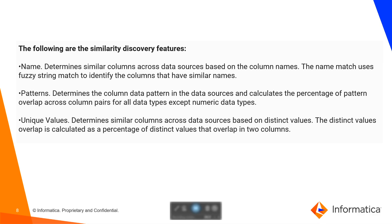What are the similarity discovery features available for 10.5 when using the similarity discovery scanner? You can determine similar columns across data sources based on column names; the name match uses a string method to identify columns that have similar names. For patterns, you can identify data patterns in data sources and calculate the percentage of pattern overlap across column pairs for all data types. For unique values, you can determine similar columns across data sources based on distinct values, where the distinct value overlap is calculated as a percentage of distinct values found between two columns.